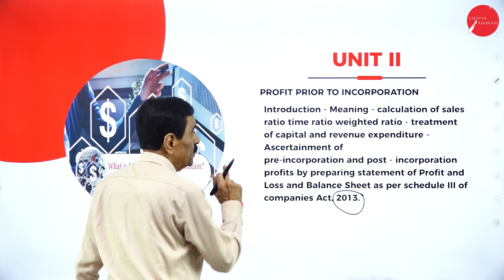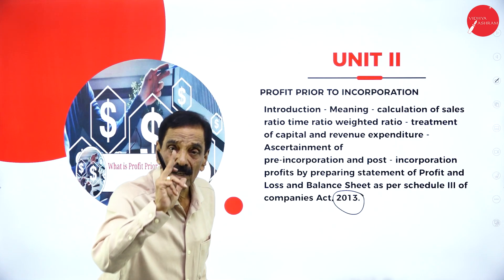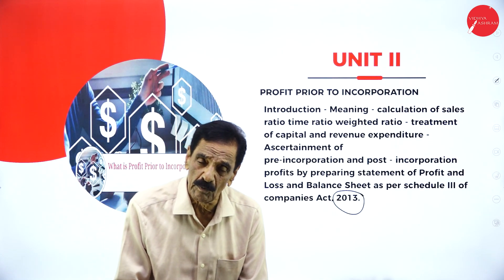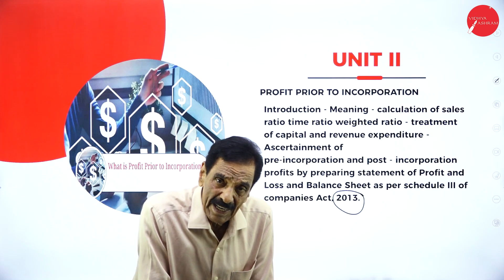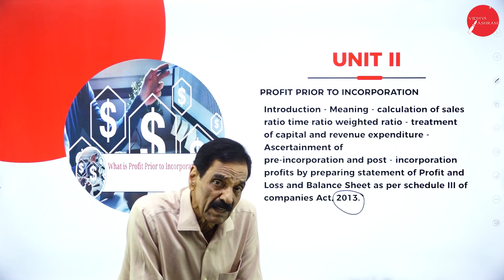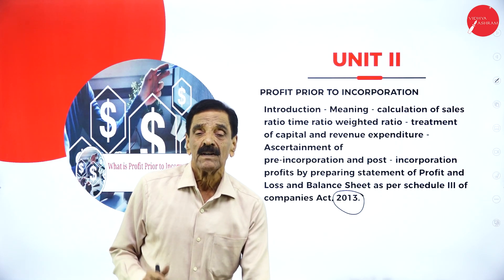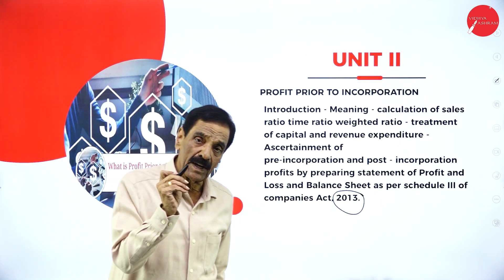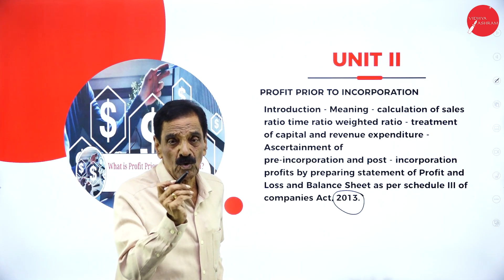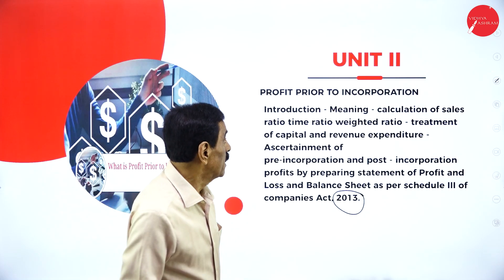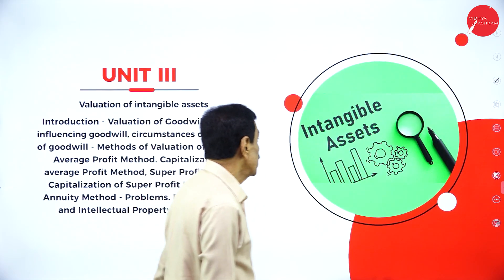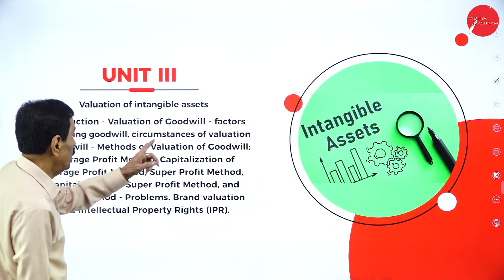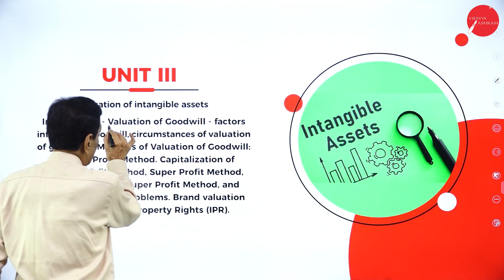In this chapter, you get one question for 10 marks, one for 15 marks, and one for 2 marks — covering 27 marks total. Part A is theory; Part B may include theory and problems. Then we move on to Unit 3 — Valuation of Intangible Assets.